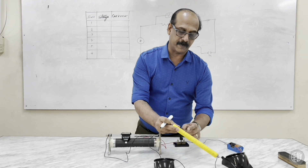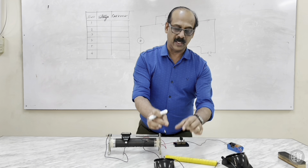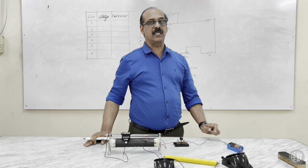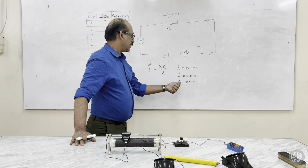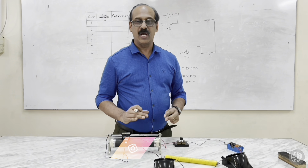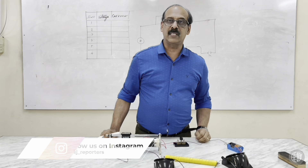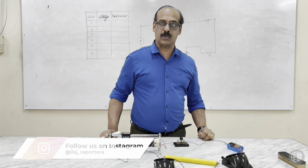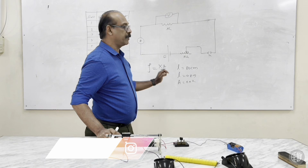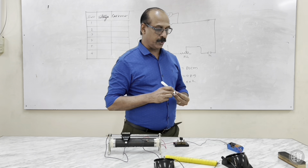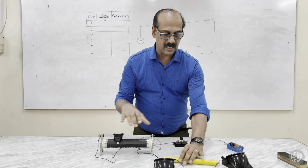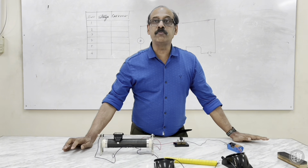A is the area of cross-section of this wire. If you take it as a straight wire, it will be around 80 centimeters long. The radius of the wire can be calculated using a screw gauge, which I'll explain later. Using the formula A equals pi r squared, area can be determined. Now I will introduce each component we are using — this system is called the Ohm's law experiment.